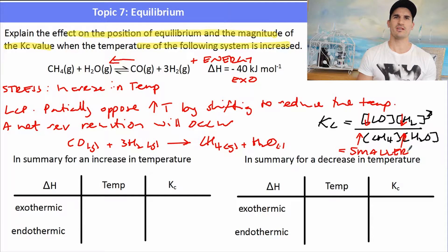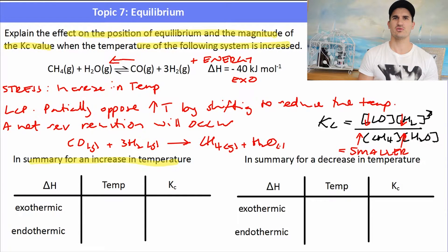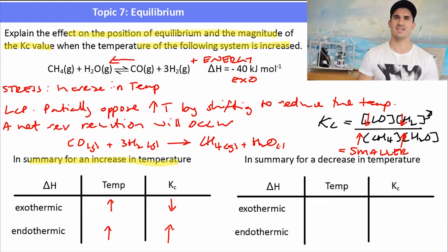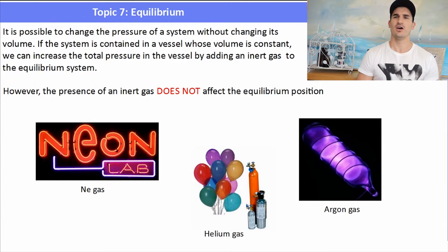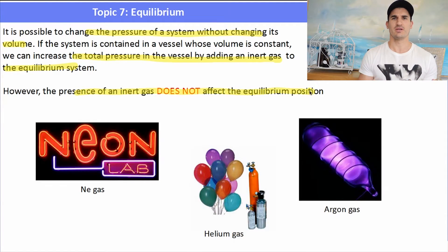To summarise temperature effects: for an exothermic reaction, increasing temperature decreases the K value; increasing temperature for an endothermic reaction increases the K value. Increasing temperatures favour endothermic reactions. For a decrease in temperature, the K value goes up for an exothermic reaction and down for endothermic — so decreasing temperature favours an exothermic reaction. It's also possible to change the pressure of a system without changing its volume by adding a noble or inert gas. A noble gas does not affect the position of equilibrium because K is a constant and it's not part of the equilibrium mixture.